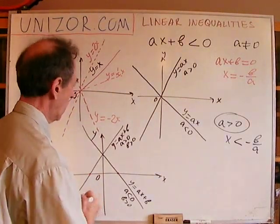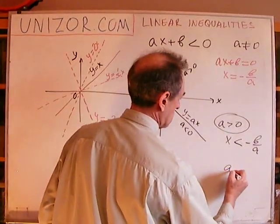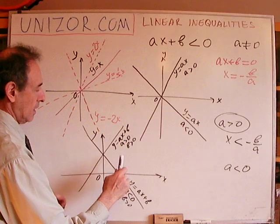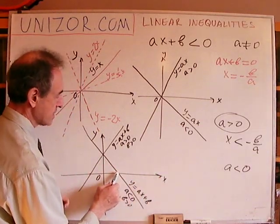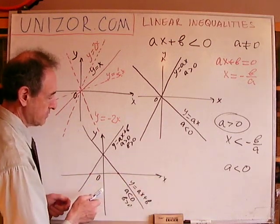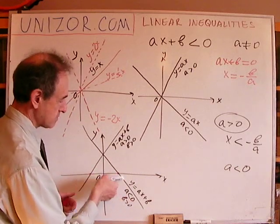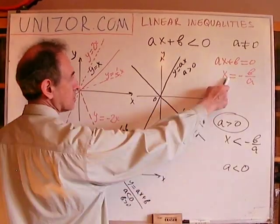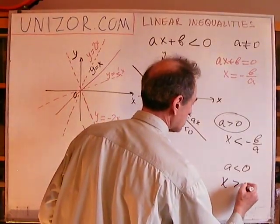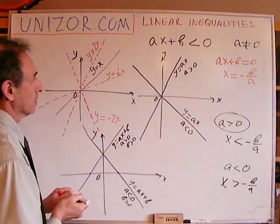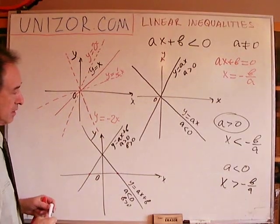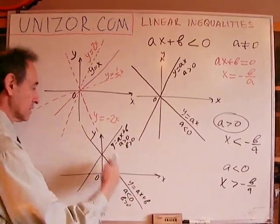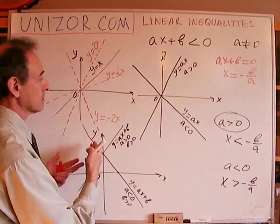So when a is greater than zero, our solutions are to the left of this zero point — x less than minus b over a. In case a is negative, the graph is monotonically decreasing. If I increase x from the zero-crossing point toward plus infinity, the graph decreases — it goes below zero. So I have to move to the right from this point, meaning x should be greater than minus b over a. If I move to the left, the monotonically decreasing function increases in value and goes above zero, which does not satisfy our inequality.